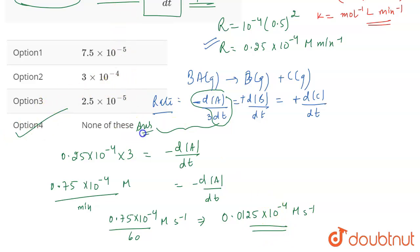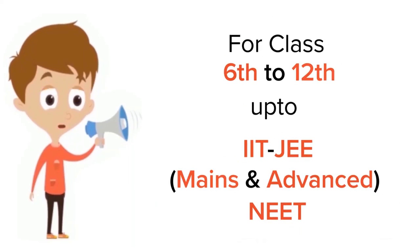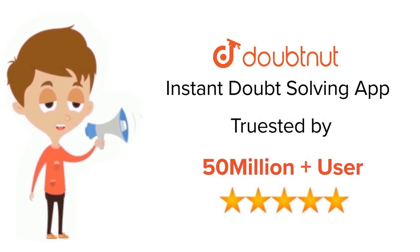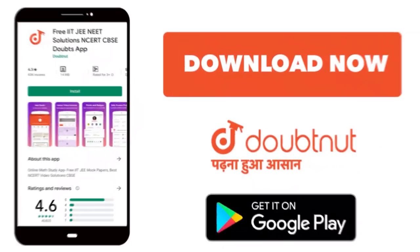So the correct answer for this question is none of these, option 4. That's all for the question. For class 6 to 12, IIT and NEET level, trusted by more than 5 crore students, download Doubtnet app today.